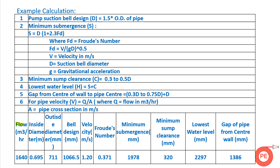Moving to the example: the pump flow considered is 1640 m³/hour. The inside diameter is calculated from Q = A × V, considering a suction-side velocity of 0.6 to 1.5 m/s. The inside diameter comes to 0.695 m, so the outside diameter in mm is 700 — this is basically a DN 700 pipe. The first value to calculate is the pump suction bell design, which is 1.5 times the outside diameter of the pipe.